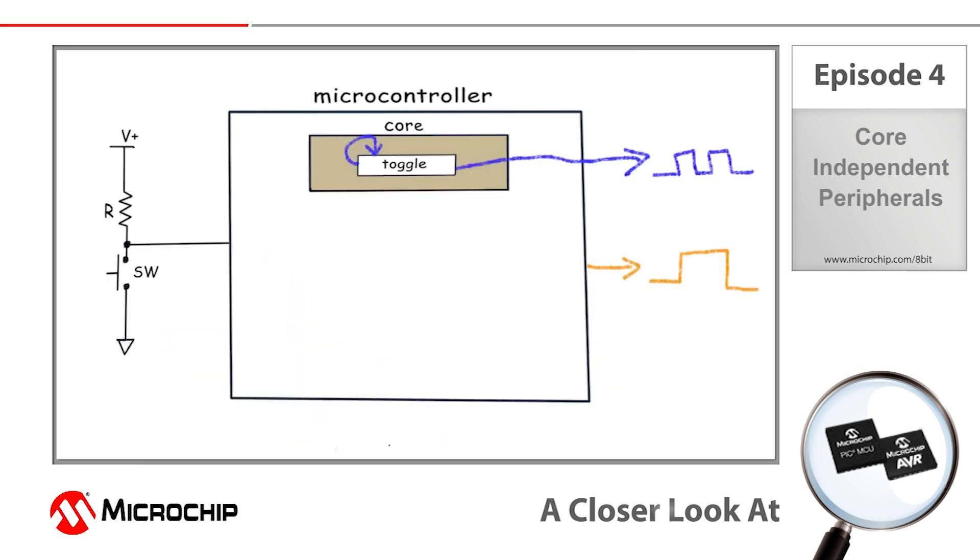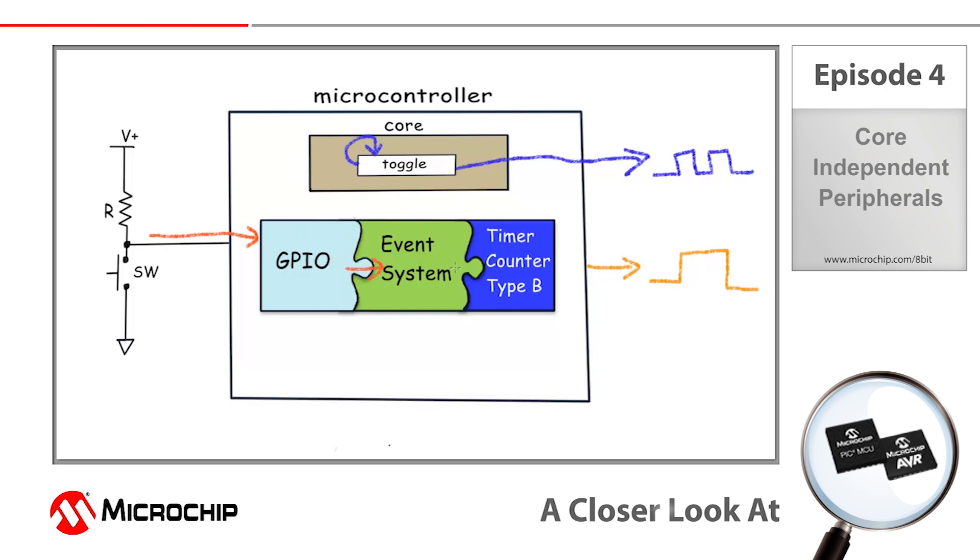Implementing these capabilities into our application will look something like this. So again, the microcontroller core is used to toggle that heartbeat signal on the IO pin. However, this time instead of relying on interrupts and the core to drive our one shot pulse, we're going to route the change event on our port pin connected to the push button through the event system and connect it to our timer counter type B so that it will trigger an output pulse for two milliseconds. As you can see by this block diagram, the core is actually relieved of any tasks associated with the detecting of the push button press or executing the one shot output since this is all done in hardware using the peripheral capabilities.